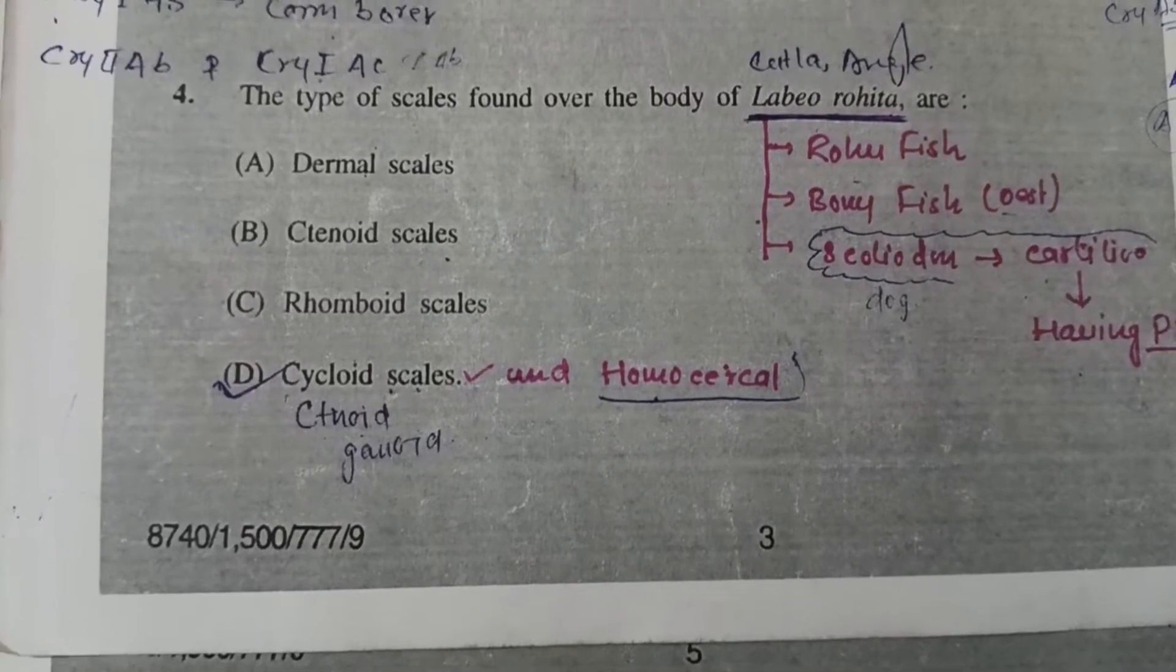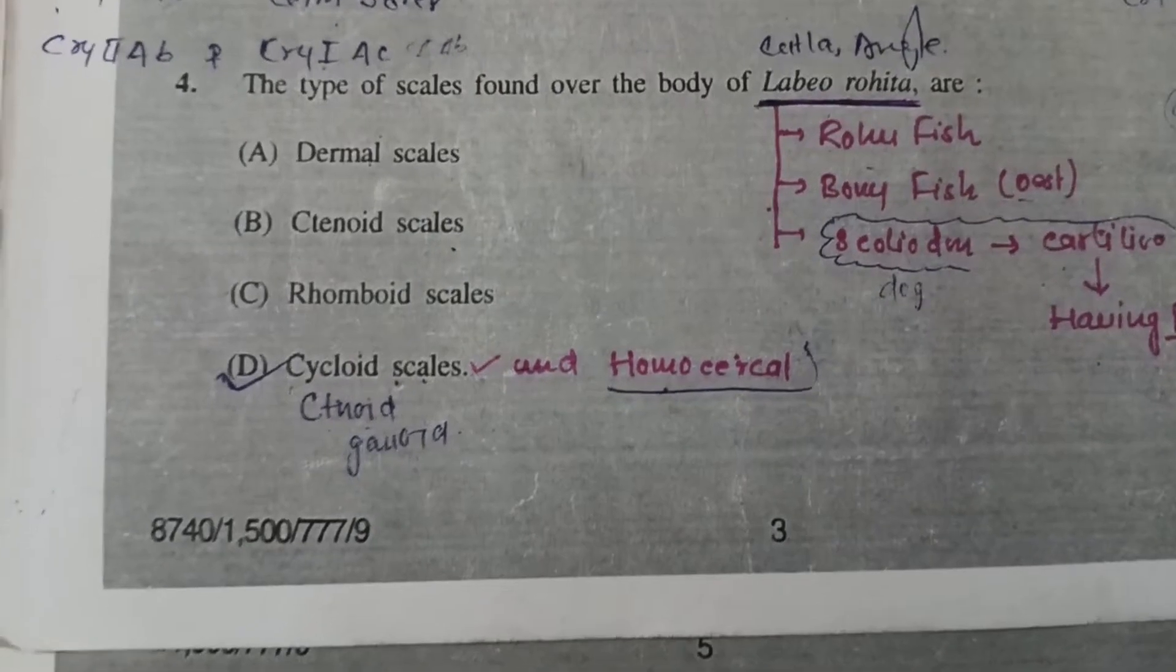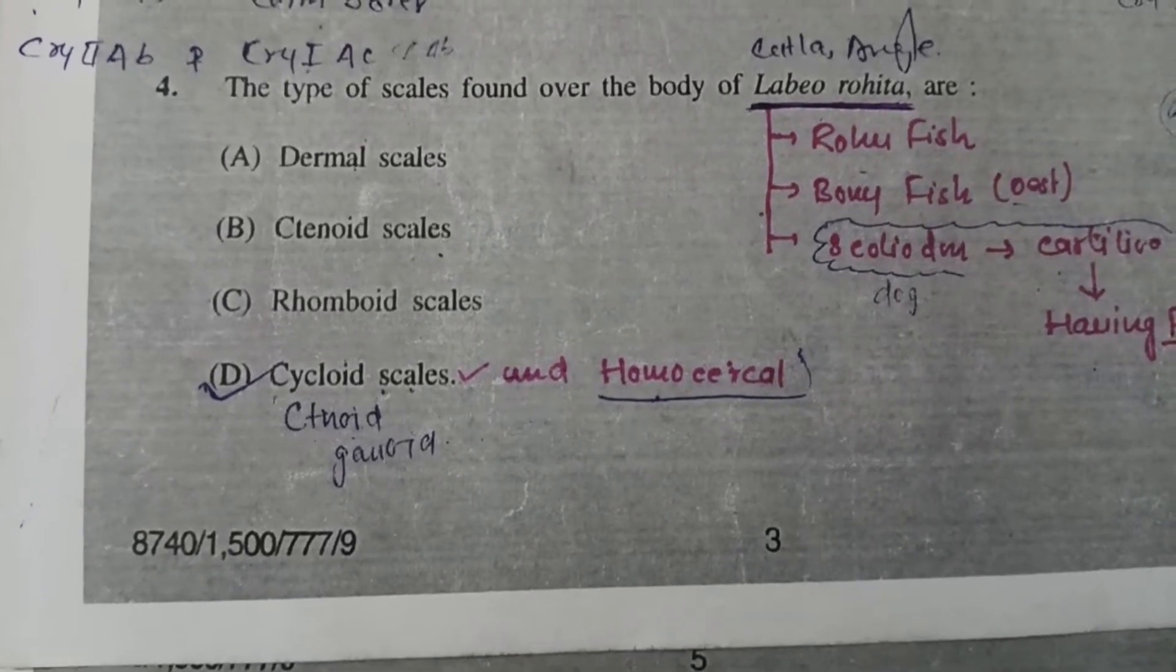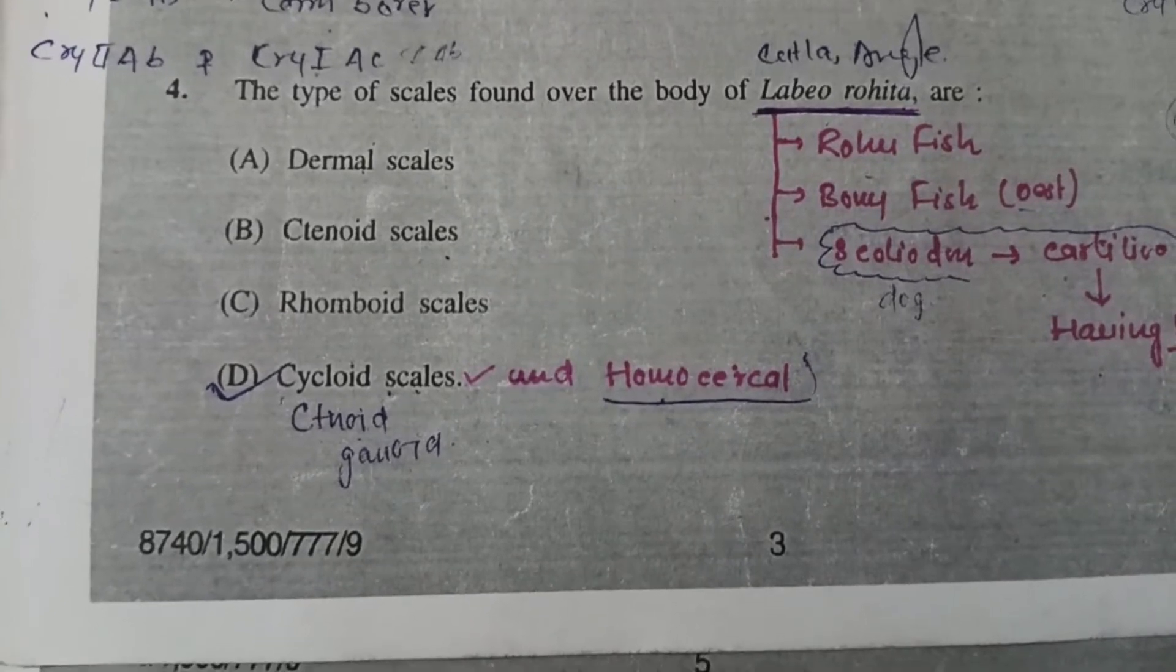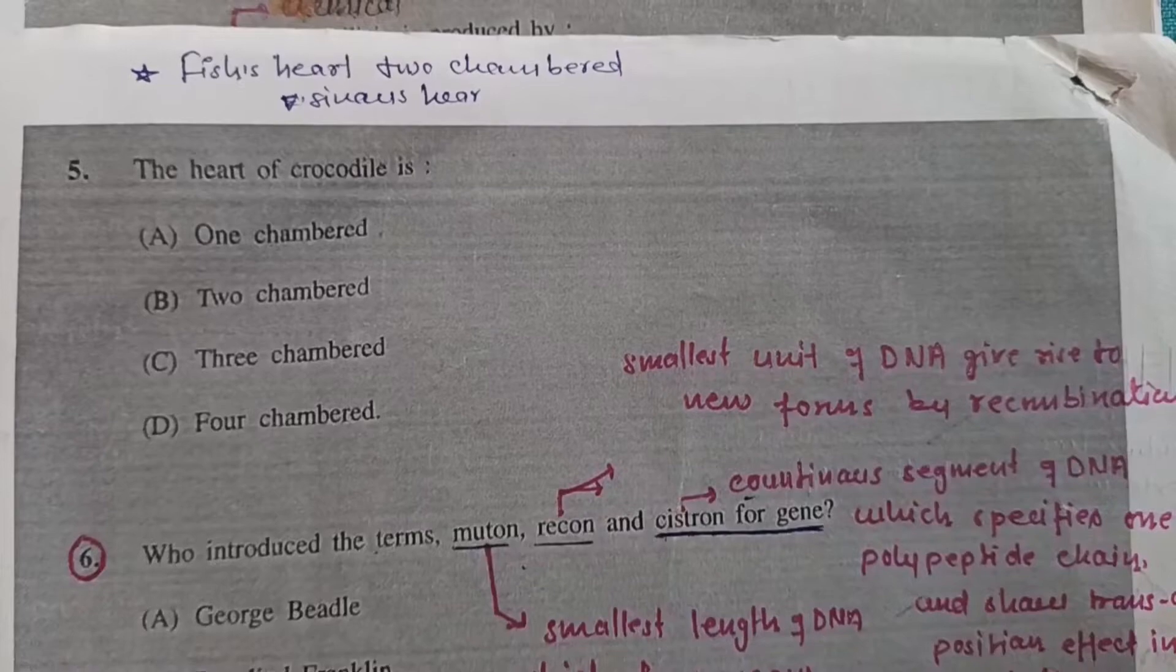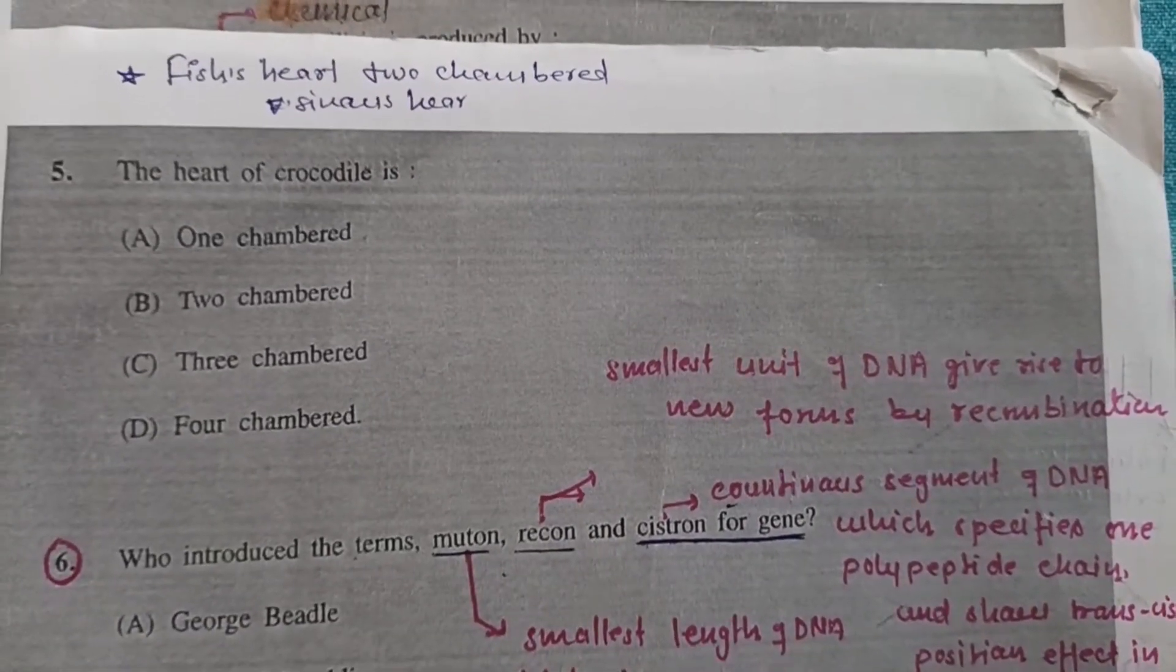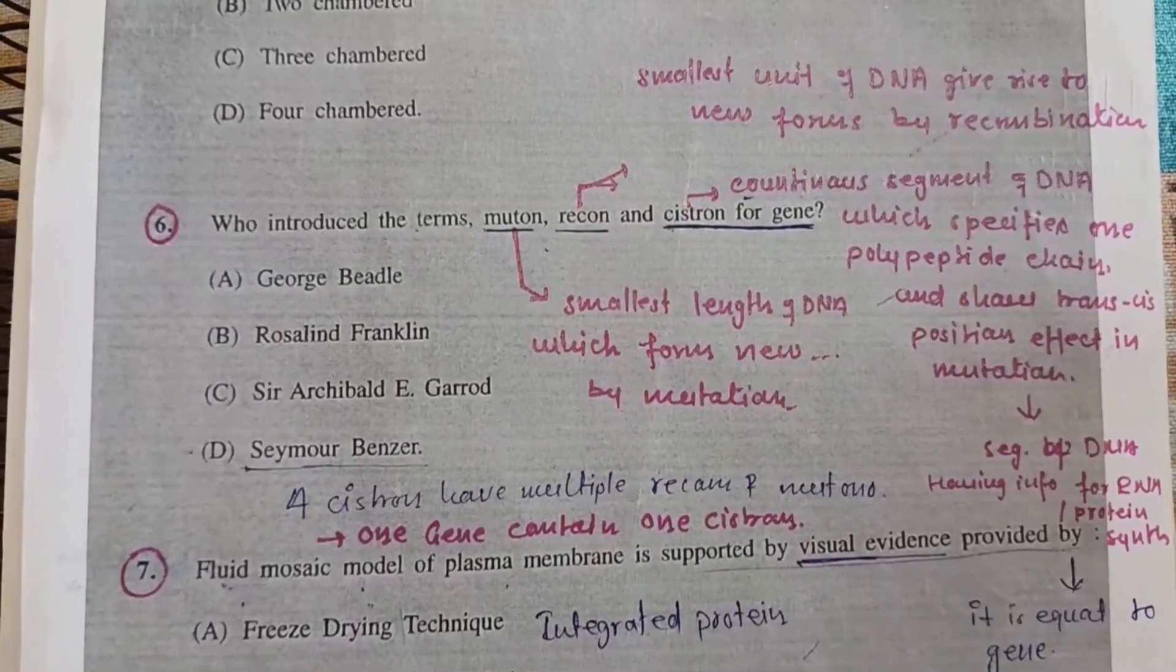Question 4: The type of scales found over the body of Labeo rohita - Labeo rohita is rohu fish, which is a bony or osteichthyes, so option D, cycloid scales, is the right answer. Question 5: The heart of crocodile is - Correct option is D, four-chambered.